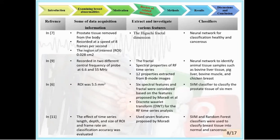In one reference, prostate tissue removed from the body was used and RF time series were recorded at 8 frames per second, with a neural network used for classification of healthy and cancerous tissues. Another reference recorded at two different center frequencies and used fractal features, Higuchi fractal features, spectral properties, and 12 properties extracted from B-mode images. Results showed that fractal dimension and spectral properties are the best features for classification. These were used to identify animal tissues such as bovine liver, pig liver, bovine muscle, and chicken breast.